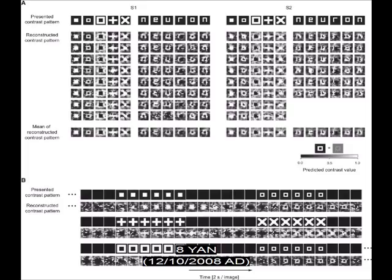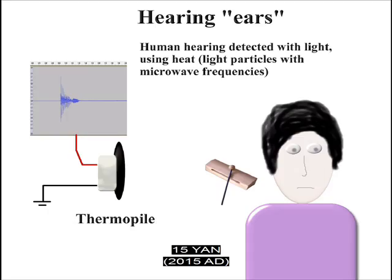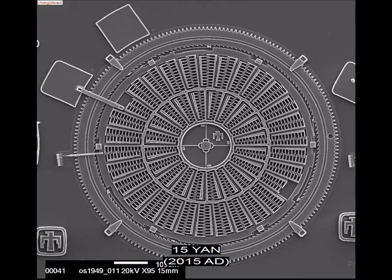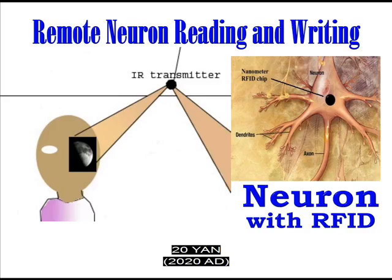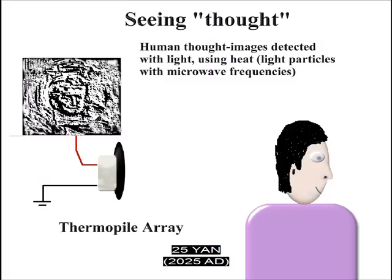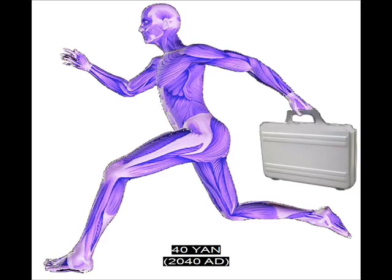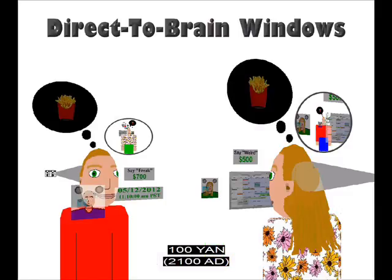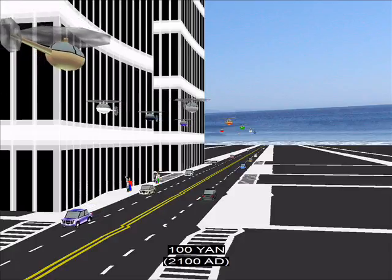Microscopic radio chip. Remote neuron reading. Image of what the eyes are seeing captured remotely. Sound a brain hears recorded remotely. Microscopic camera. Radio device functions as cell organelle. Remote neuron writing using microscopic devices and neurons. Thought images seen. Thought audio recorded and played out loud. Humans start to communicate by thought image and thought sound only. Microscopic flying camera. Artificial muscle bipedal robot. Humans walk with robot servants. Most humans communicate only by images and sounds of thought. Helicopter cars form a second line of traffic above the streets.